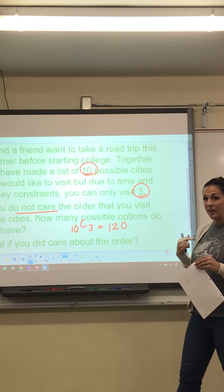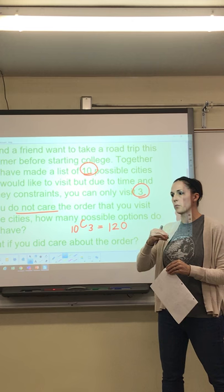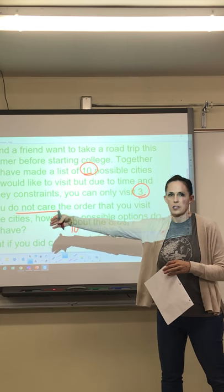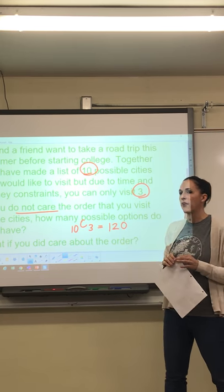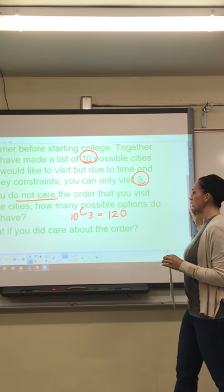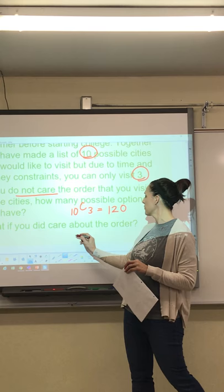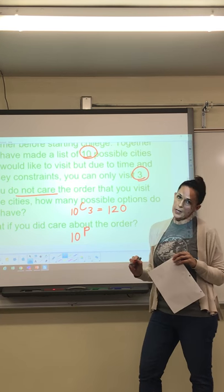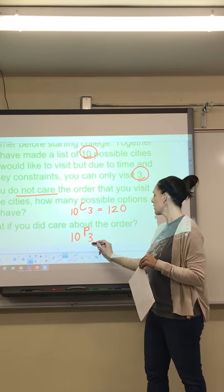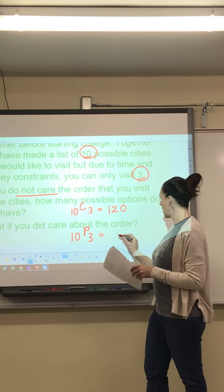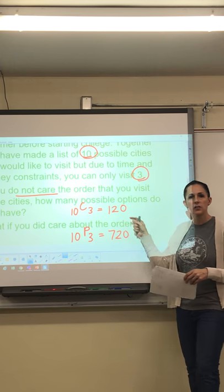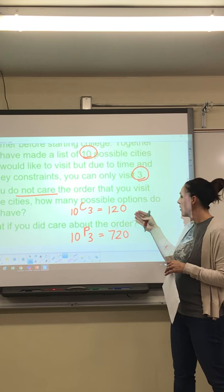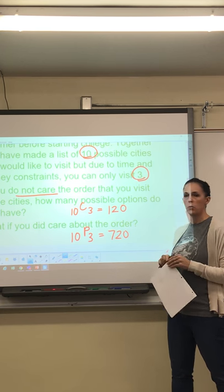But what if you did care about the order? I personally would care about the order because I would want to drive from one city, go past another, and come back. I would want to save on gas. I would want to go to the next closest city before going to the next and strategically plan out that route. So I would care about the order. In that case, we would be using permutation. Our n would still be 10. We would go to the probability button and find nPr, 3. So we would be getting an answer of 720. Look at those two different answers we got. When you have combination, you have fewer possible options. Versus when you change the order around, you have a lot more possible outcomes.